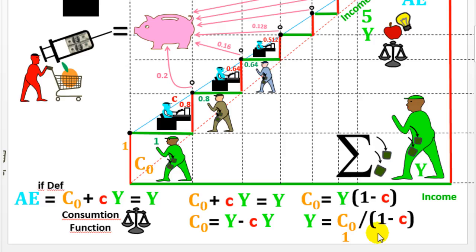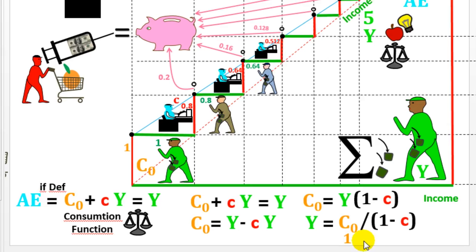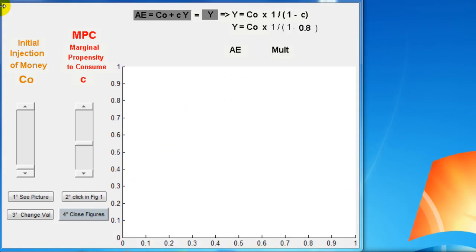So we have two ways of getting the same result. Here we have the same, and in equilibrium, aggregate expenditure is equal to income, and out of this expression we can isolate Y, exactly the same as before.